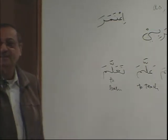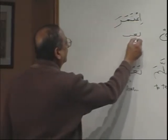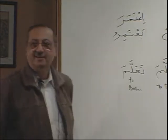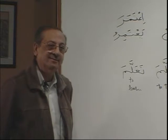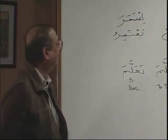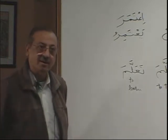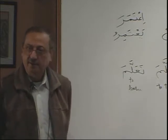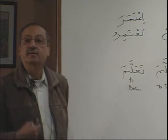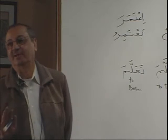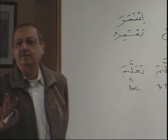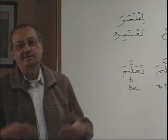Can we conjugate the whole maadi? I'tamara, i'tamara, i'tamaru, i'tamarat, i'tamarata, i'tamarna, i'tamarta, i'tamartuma, i'tamartum, i'tamarti, i'tamartuma, i'tamartunna, i'tamartu, i'tamarna. Very good. See how easy it becomes once you get the grip on the format. If you memorize a couple like zahabah and katabah, you just follow it.